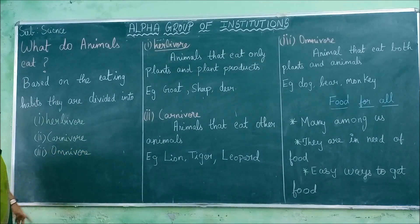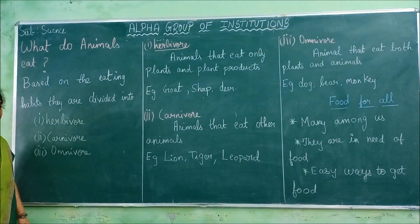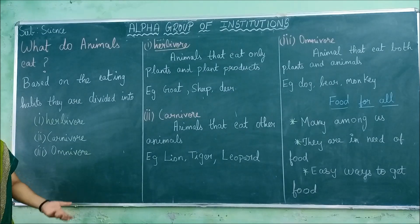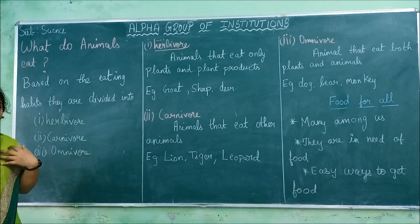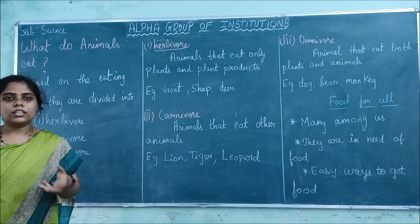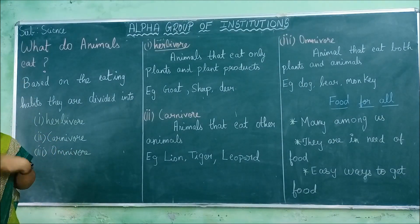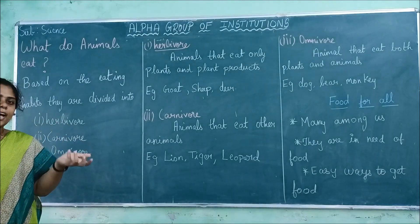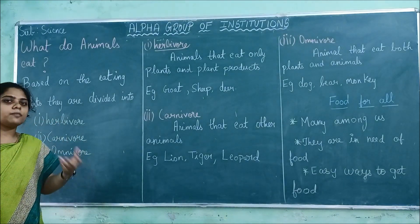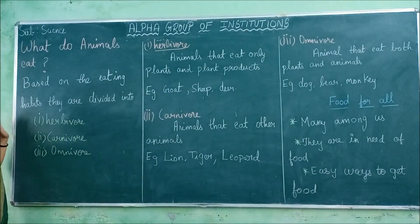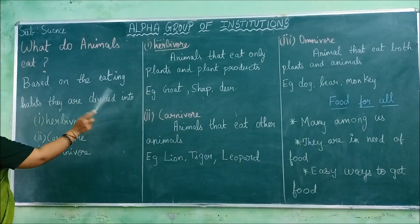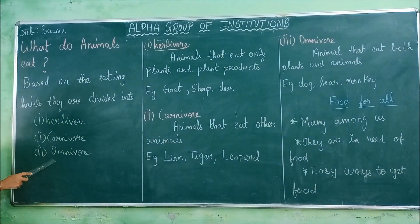Now we are going to see about what animals eat. For example, you may have a pet at home or domestic animals — what food do you give them? Some may give pedigree. Based on their eating habits, animals are divided into three types: herbivore, carnivore, and omnivore.